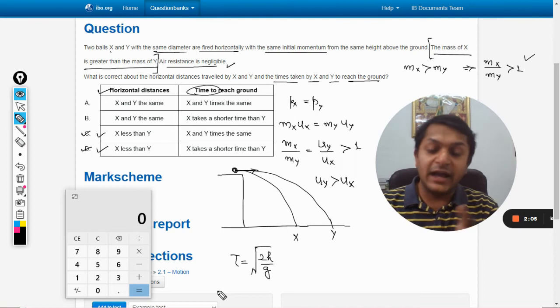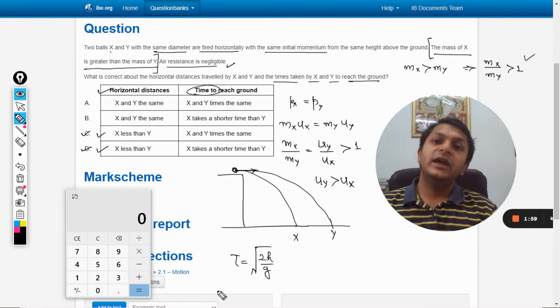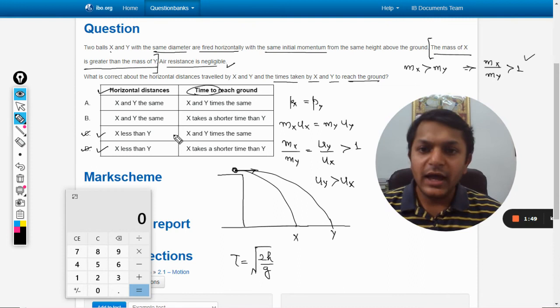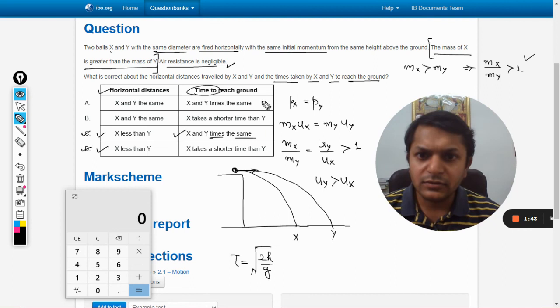So the time formula is root of 2h by g. As it can be seen here, it is evident from the formula that this does not depend upon the mass of the body. It is independent whether the body is heavier or whether the body is lighter. So the time taken by both of the bodies will be exactly same.